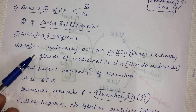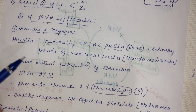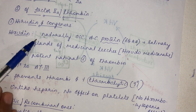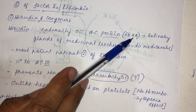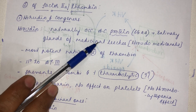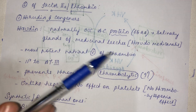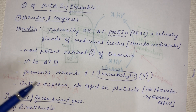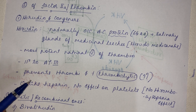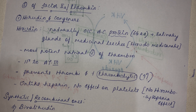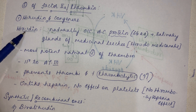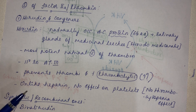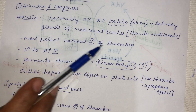Hirudin and its congeners are direct inhibitors of thrombin. Hirudin is a naturally occurring anti-coagulant protein made up of 65 amino acids, obtained from the salivary gland of medicinal leeches (Hirudo medicinalis). When leeches bite, the blood does not clot due to hirudin — it causes temporary anti-coagulation. Hirudin is the most potent natural inhibitor of thrombin.